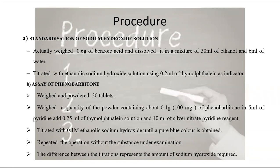After that, we will do the Phenobarbitone assay. For standardization of sodium hydroxide: we take 0.6 g of benzoic acid, dissolve it in a mixture of 3 ml ethanol and 6 ml water, then titrate the solution using 0.2 molar thymolphthalein solution as indicator.